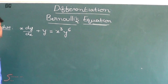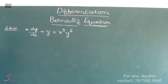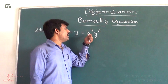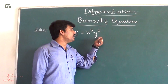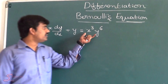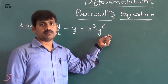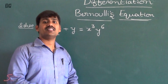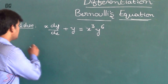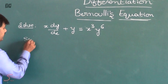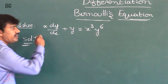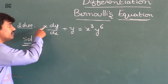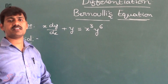We will move on to the session — we are going to solve the problem: x · (dy/dx) + y = x³ · y⁶. First, what we have to do is divide this entire equation by x only, so that the coefficient of dy/dx becomes 1.